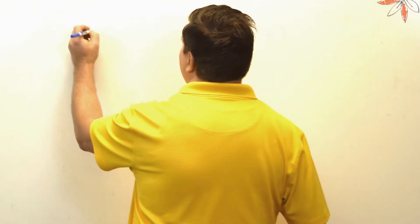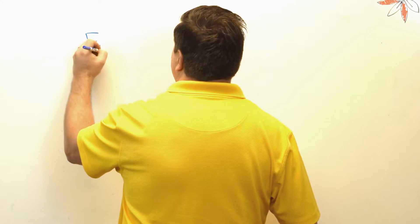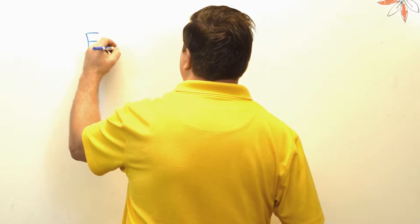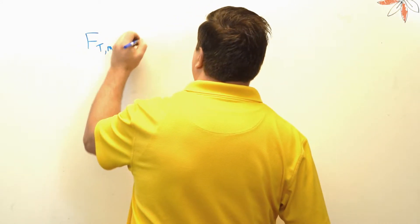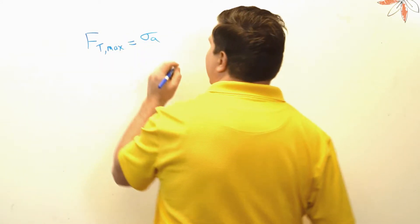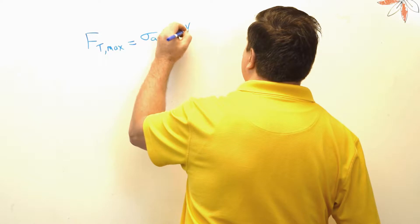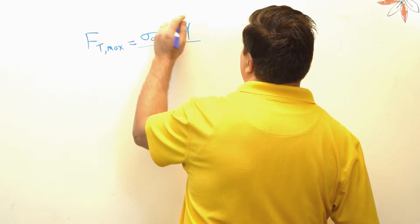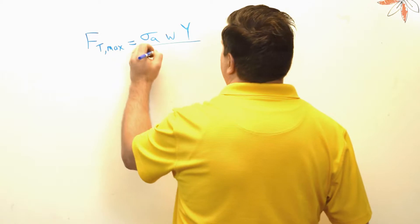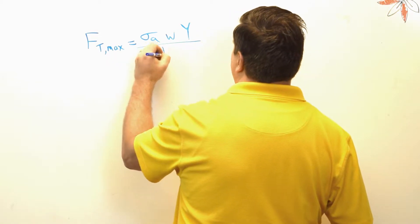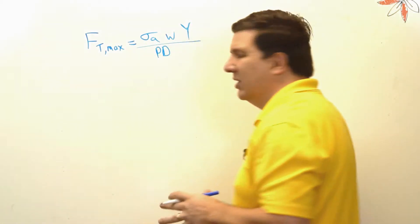So the formula is: your tangential force maximum is limited by your allowable stress times your gear width times something called the Lewis form factor, represented by the uppercase letter Y, and divided by your pitch diameter.